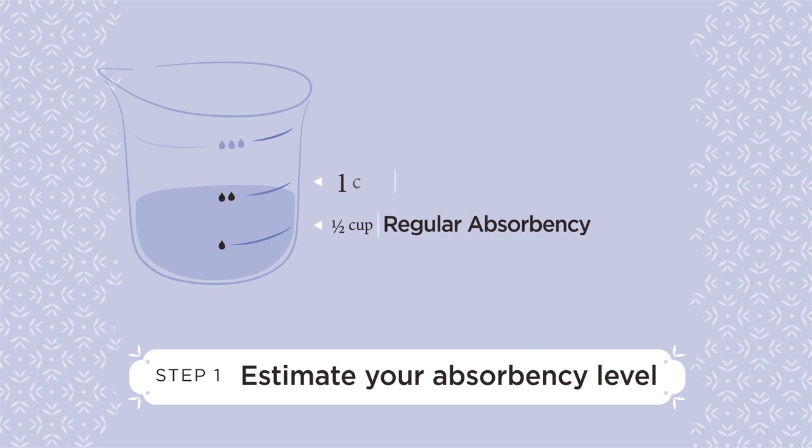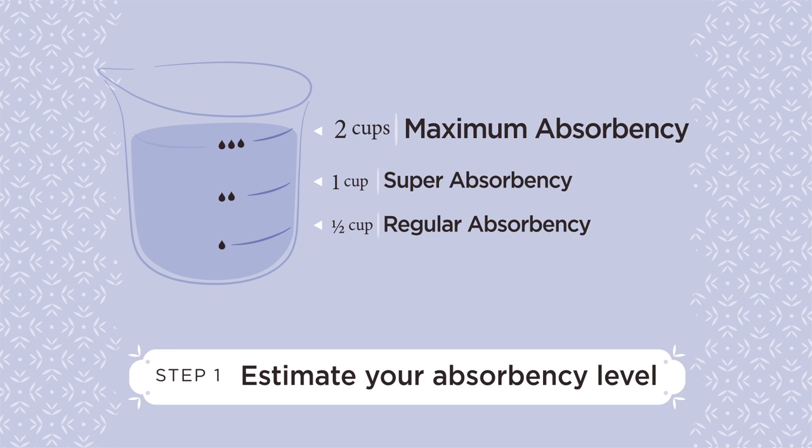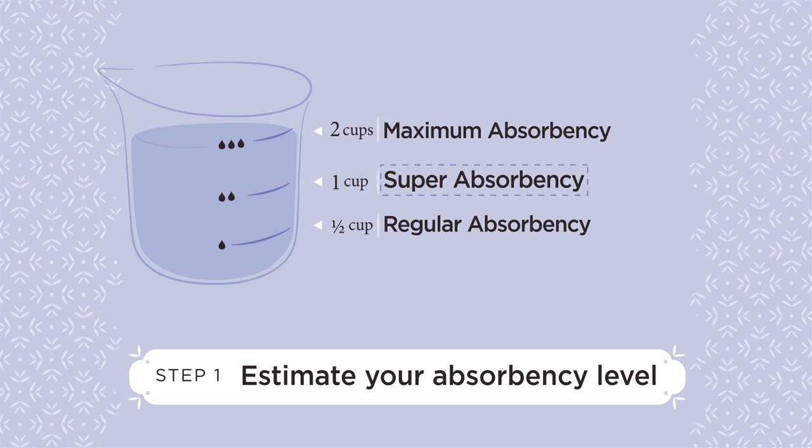If you leak one cup over the course of the day, choose the briefs labeled Super Absorbency. Finally, if you leak up to two cups over the course of the day, choose the briefs labeled Maximum Absorbency. If you're not sure about what absorbency level is right for you, we recommend choosing a higher absorbency for your first pair.